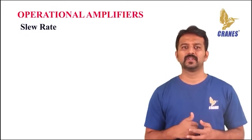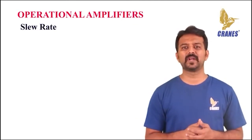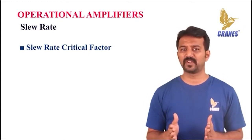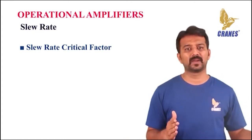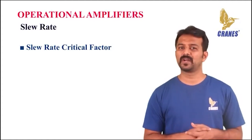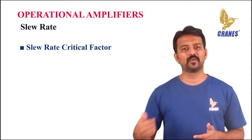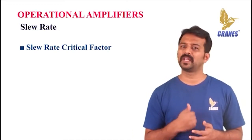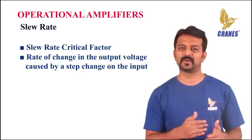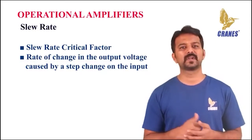The next characteristic is slew rate. The output of an operational amplifier can only change by a certain amount in a given time. This limit is called the slew rate of the op-amp, and it can be a critical factor in ensuring that an amplifier provides an output that is a faithful representation of the input. The op-amp slew rate can limit circuit performance if exceeded, distorting the waveform. The slew rate is the rate of change in the output voltage caused by a step change of the input, measured in volts per microseconds or volts per milliseconds.